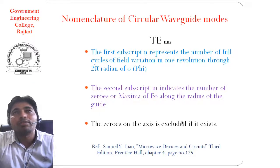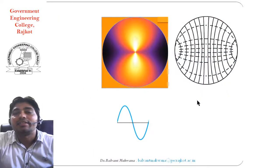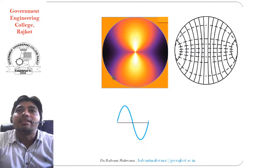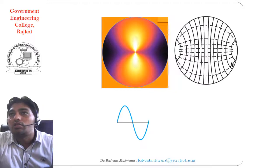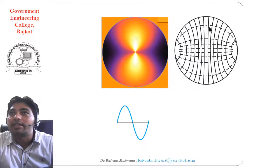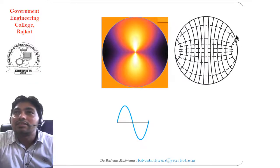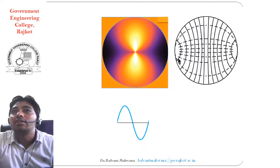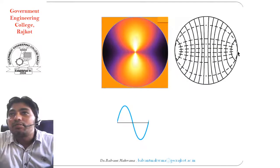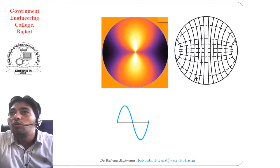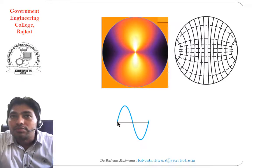We will see different modes one by one. The solid line indicates the electric field while the dotted line indicates the magnetic field. The first subscript indicates the variation of the electric field along the phi direction in one revolution, and the second subscript M indicates the variation or maxima or minima along the radius. Starting from one location and moving around the waveguide, we begin with no electric field, which is zero.